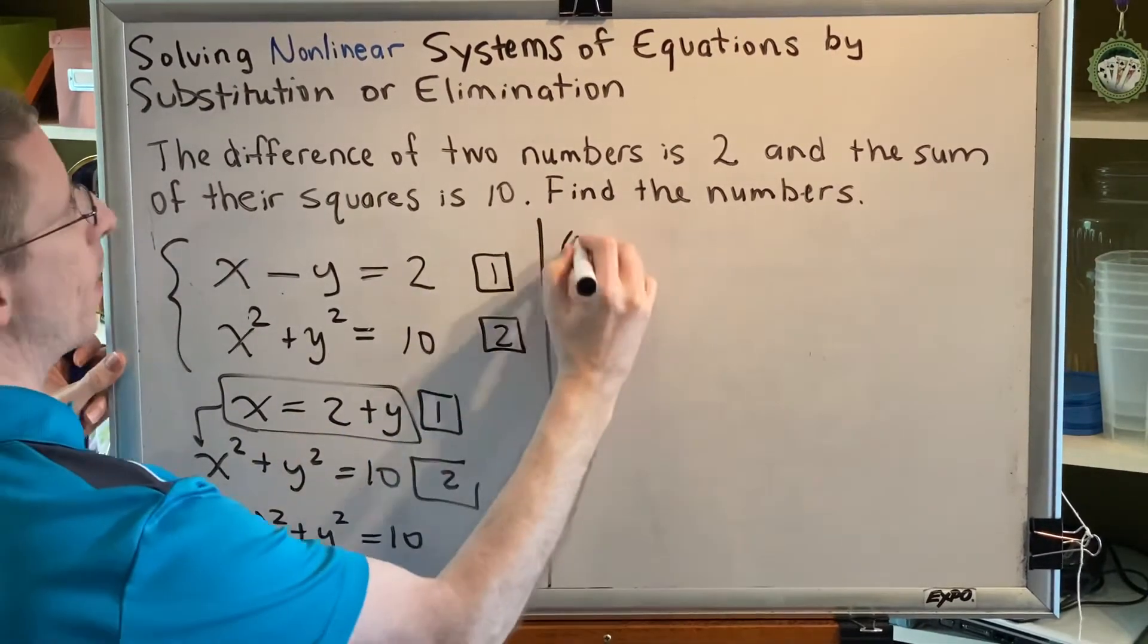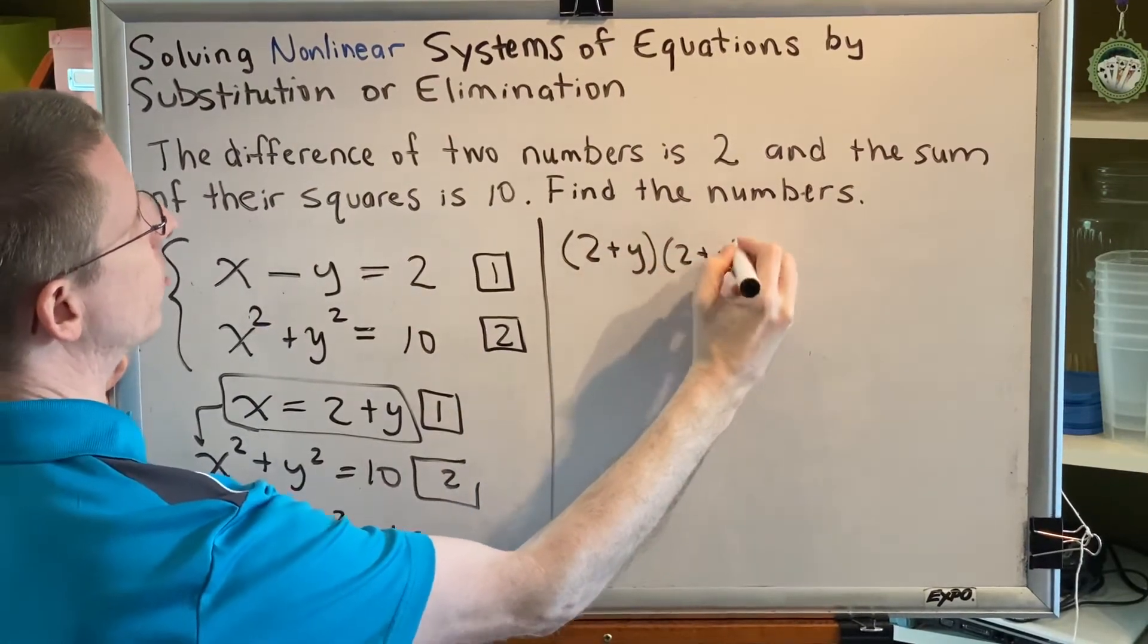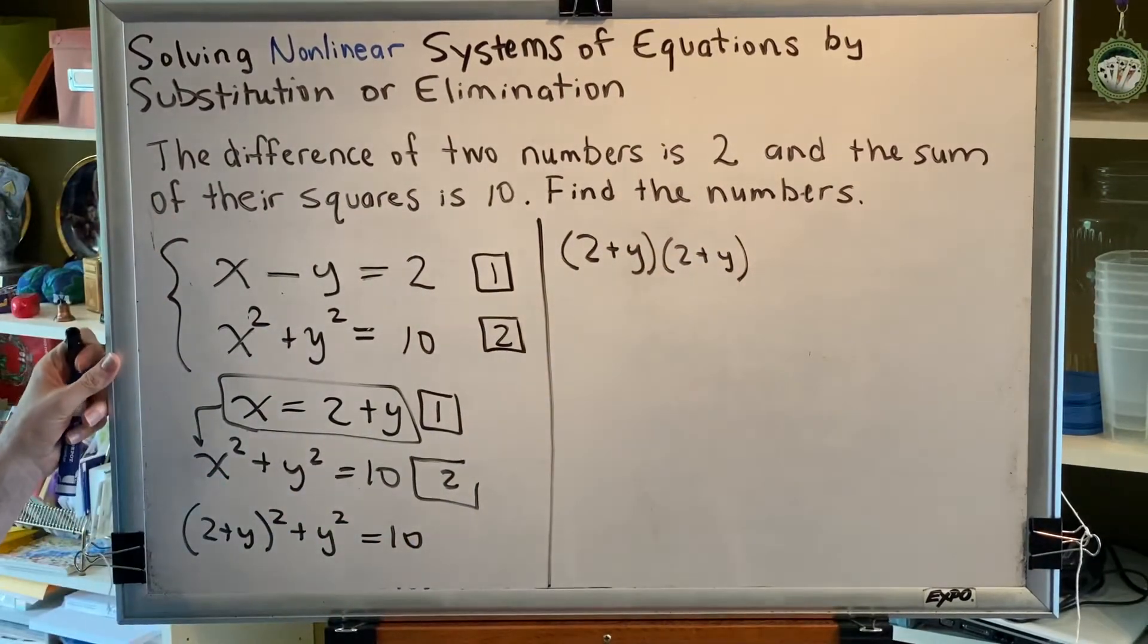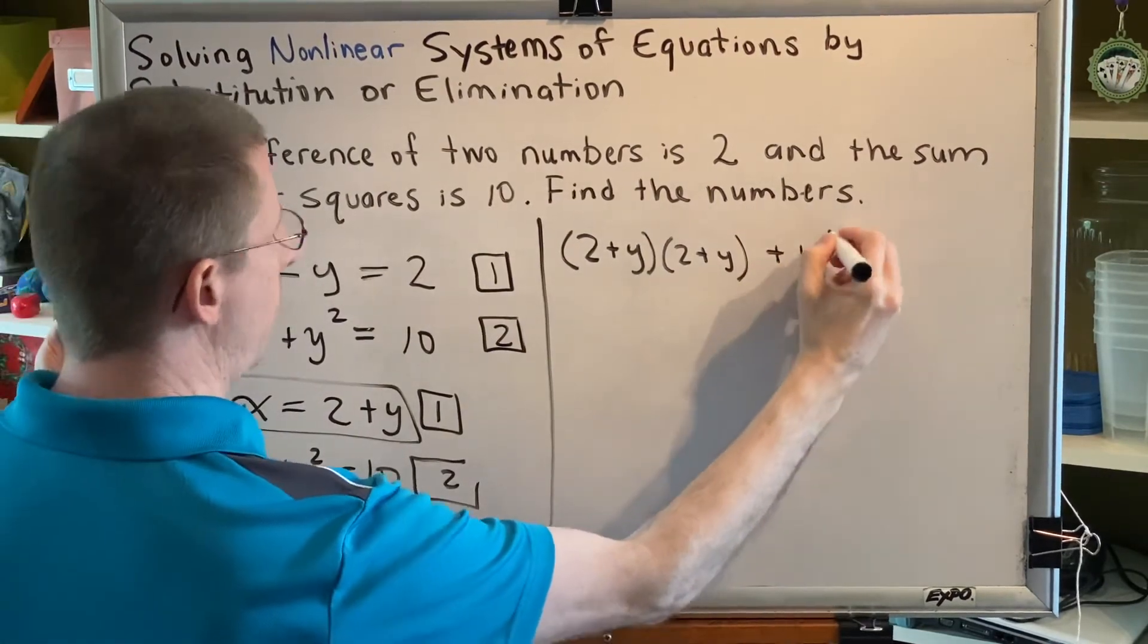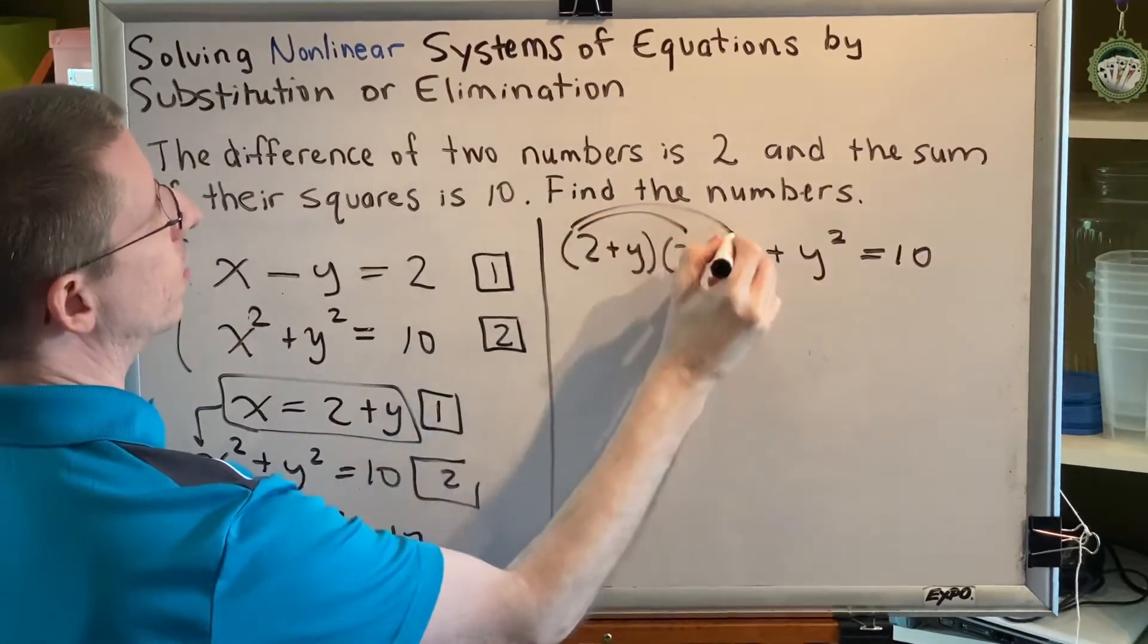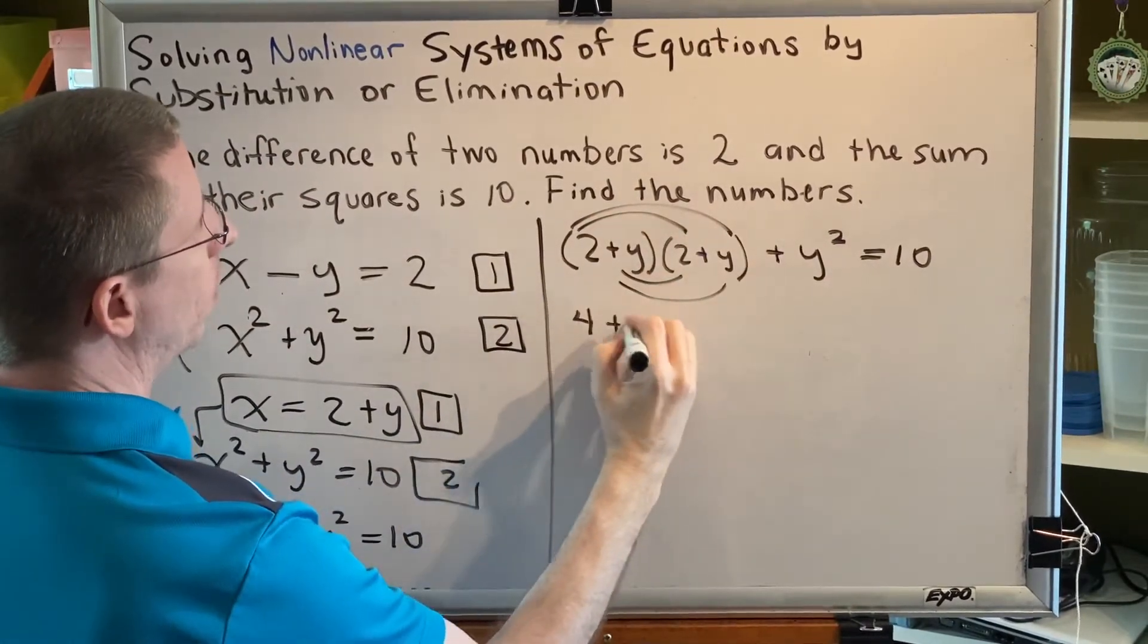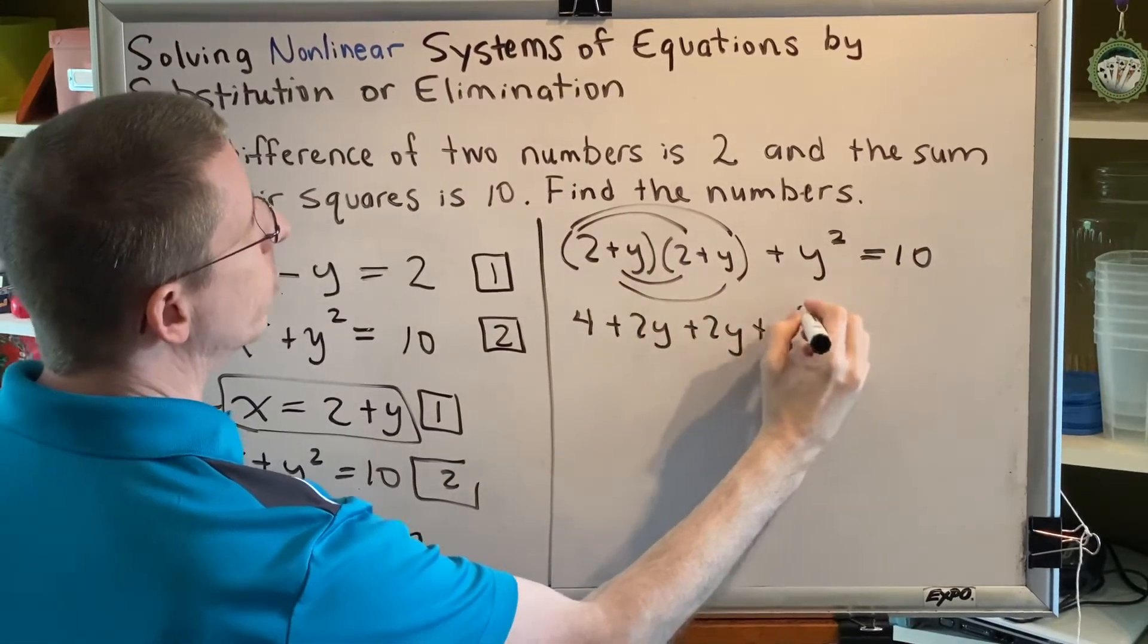An exponent tells me how many times to multiply a base by itself. So (2 plus y) squared would be rewritten as (2 plus y) times another (2 plus y). And I will use the FOIL multiplication method to get rid of those parentheses. So I get 4 plus 2y plus 2y plus y squared.